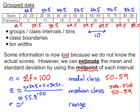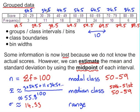Similarly, we can estimate the standard deviation by assuming that each of the scores takes the midpoint of the class interval, to give an estimate of 14.33 for the standard deviation. You should check with your calculator that you can achieve this value by using the midpoints of the class intervals to estimate the standard deviation.